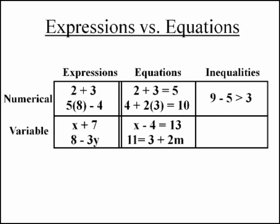Here's an example of a numerical inequality. Notice it's got greater than. 9 minus 5 is greater than 3 rather than equal. That makes it an inequality. And 6y minus 4 is less than 8 is an example of a variable inequality.